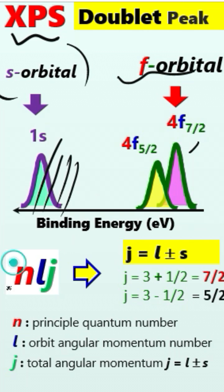This is a common nomenclature for XPS peak representations. This n represents the principal quantum number; in this case, it is equal to 4.